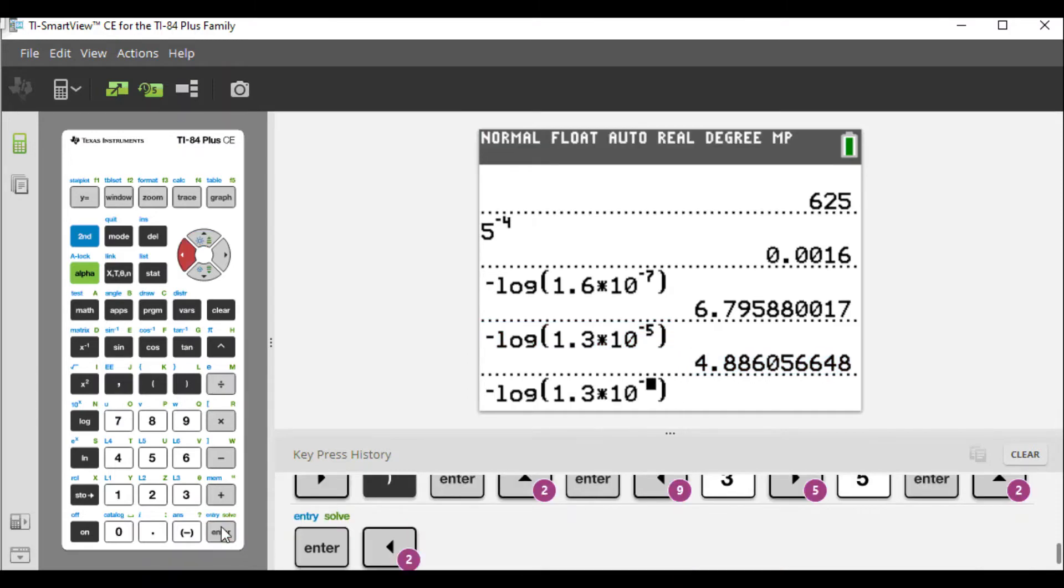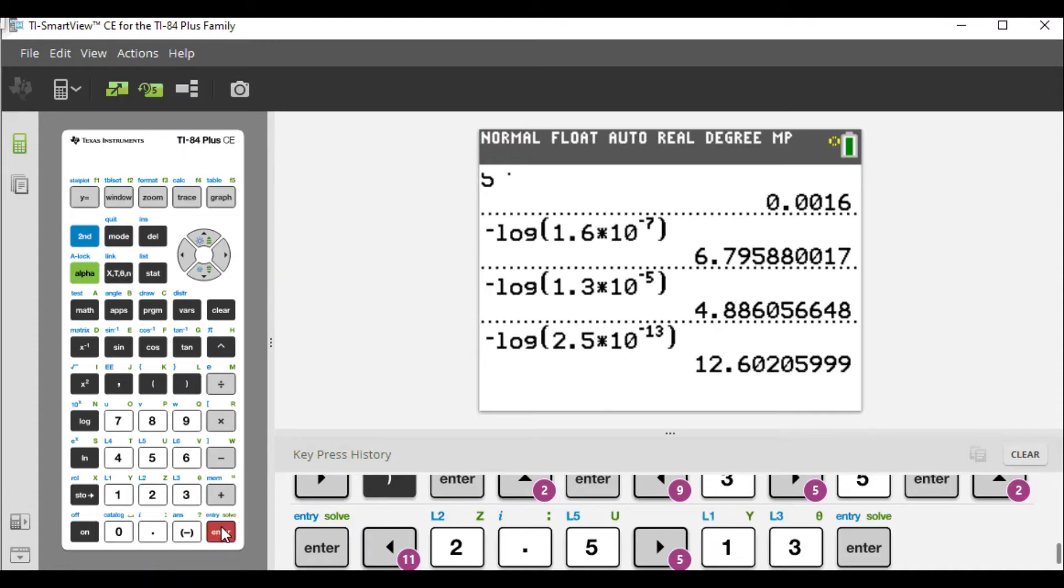Repeat this again. We're just kind of plugging in the answers now. The nice thing is we're just copying this down and we're just typing over the other numbers. It's basically the same form. So 2.5 times 10 to the negative 13, and we get 12.6.